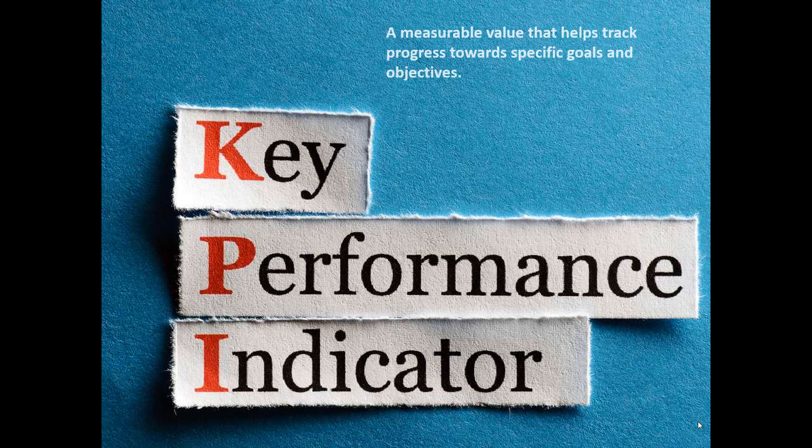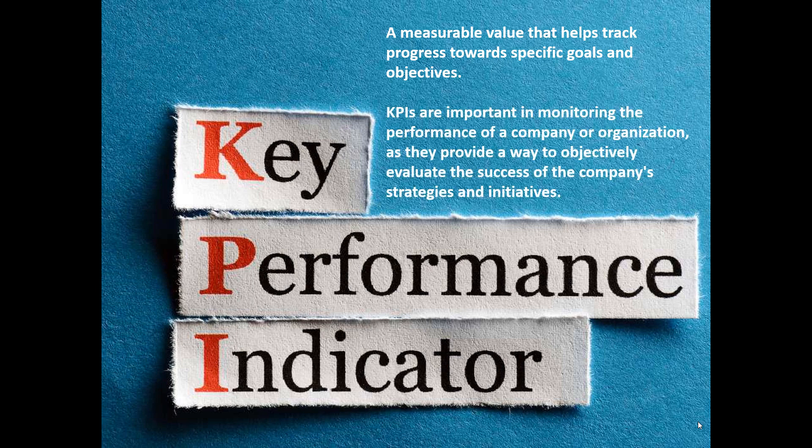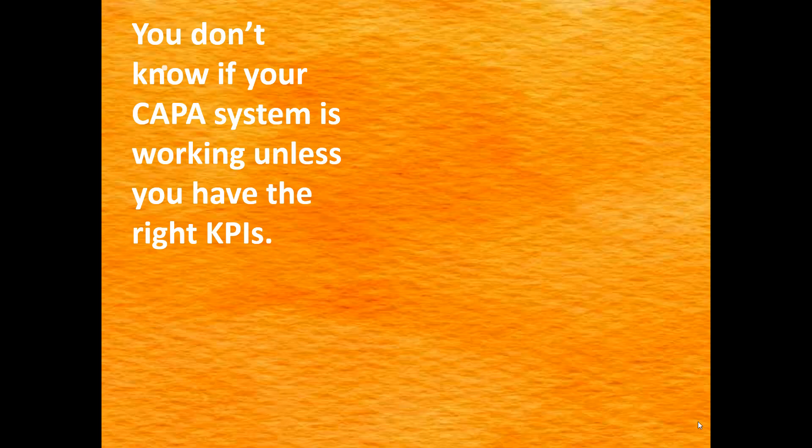So what is a KPI? A KPI is a measurable way of tracking something towards a particular goal or objective. It's very important to have KPIs in place in order to monitor the performance of whatever you are monitoring. In our case, we're looking at the CAPA system — the corrective action, preventive action CAPA system. We need to have KPIs in place to ensure that our CAPA system is working.